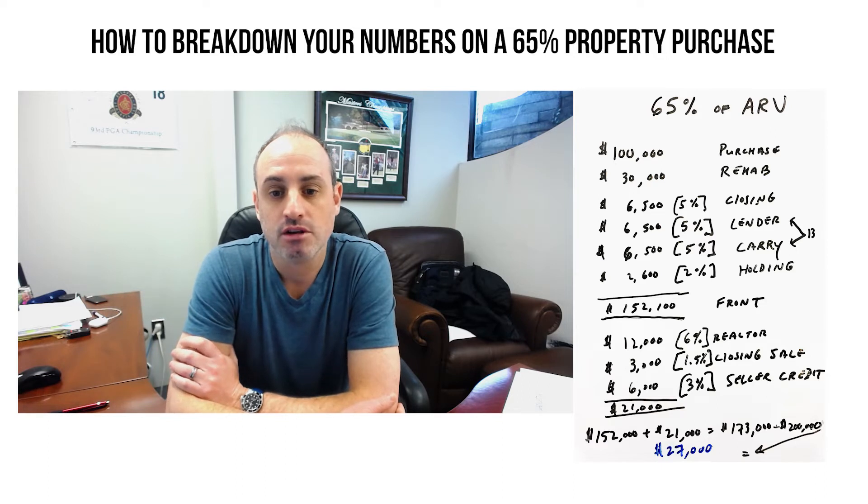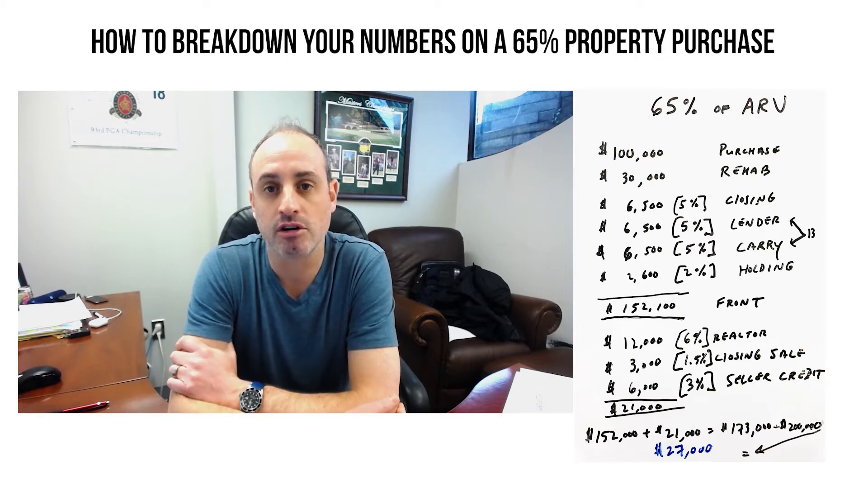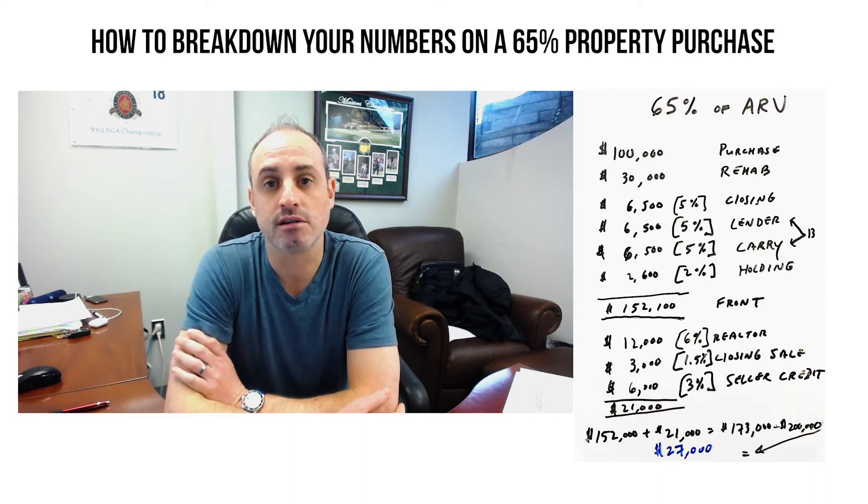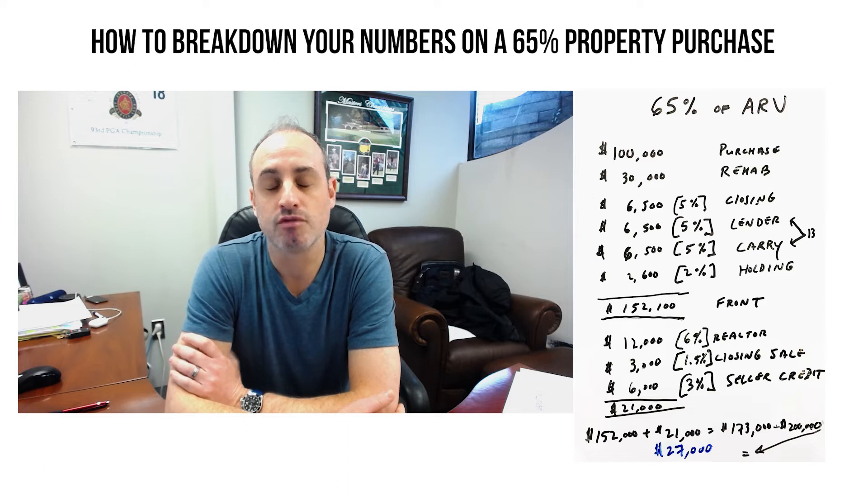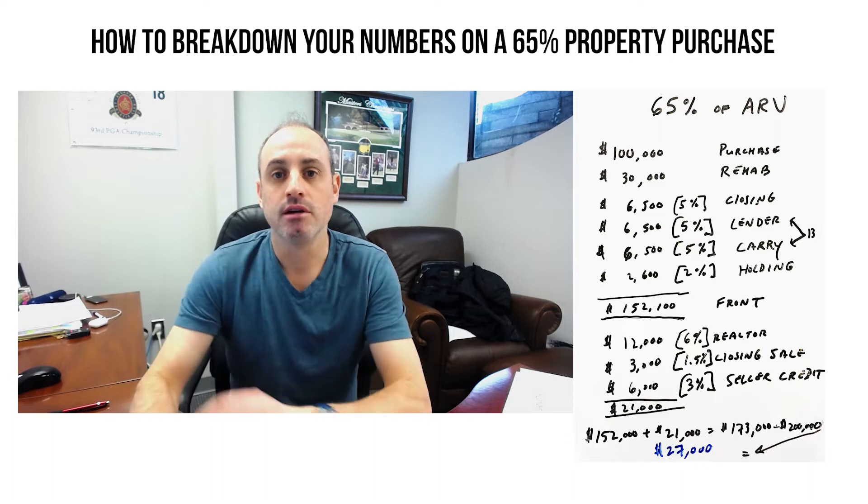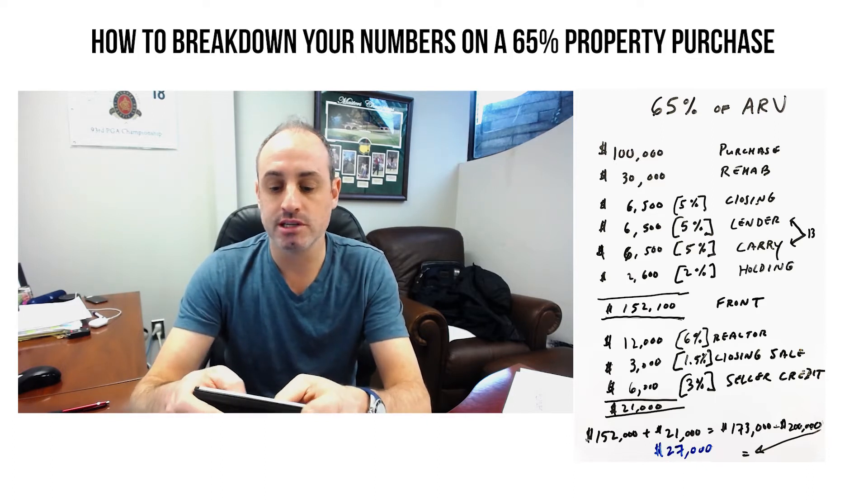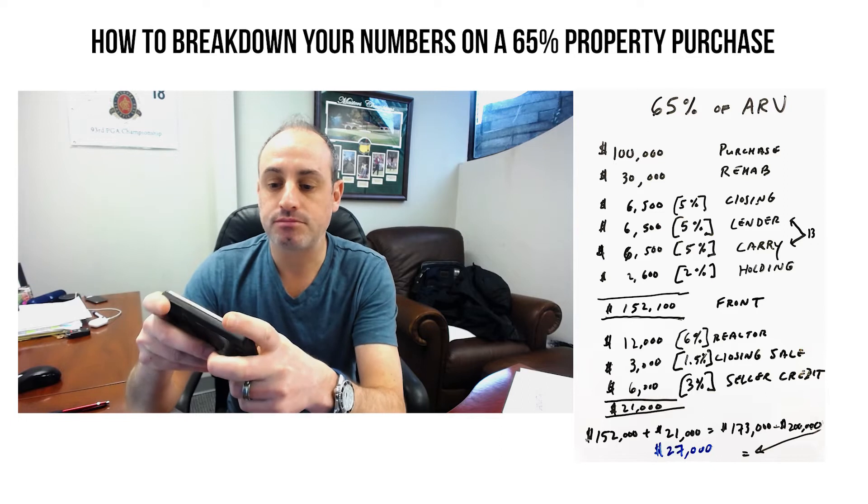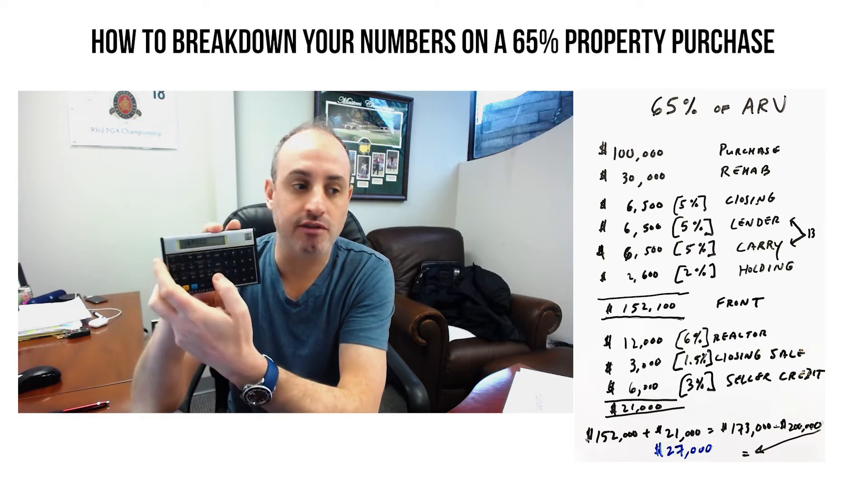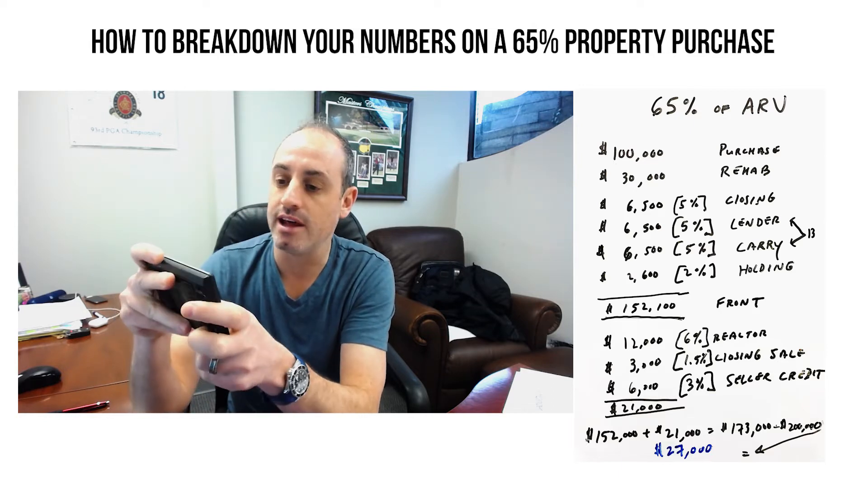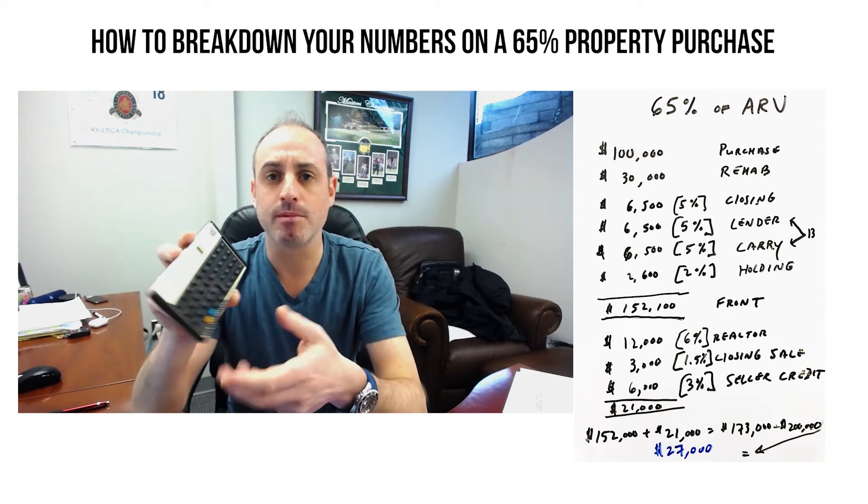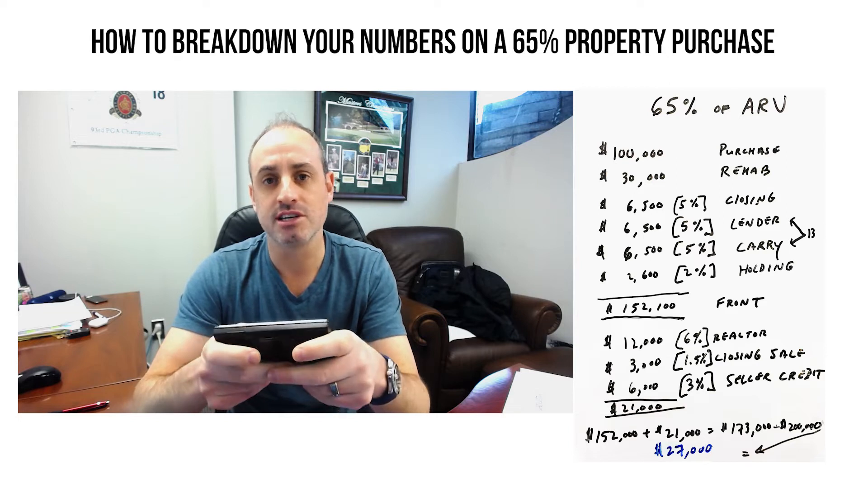Obviously if you're using a bank, maybe they charge one point, then that'll be less. Or if you're using your own cash, there might not be anything in that. But let's just go off 5% because most real estate investors out there typically will use a hard money lender to make these deals work.